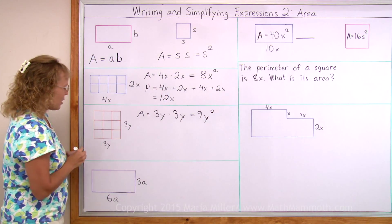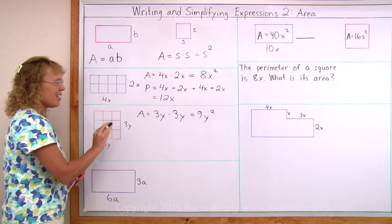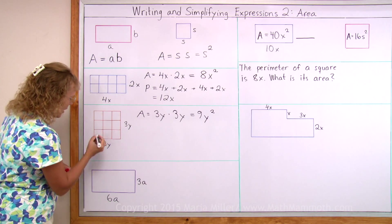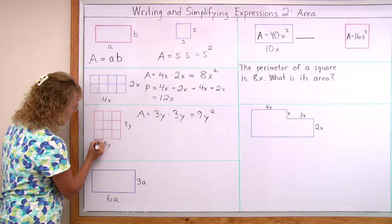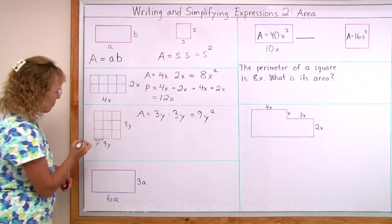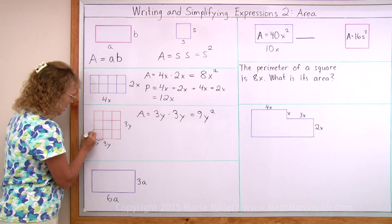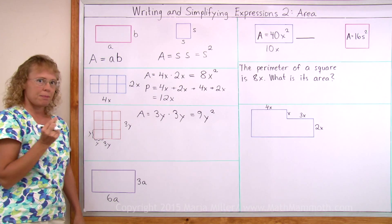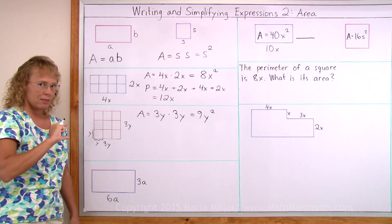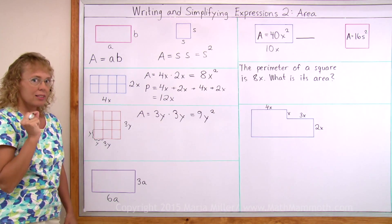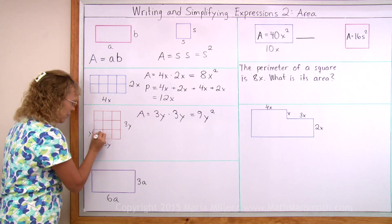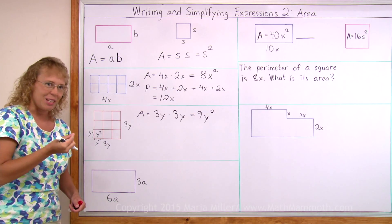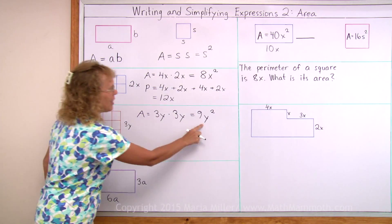I also want to show you something over here. 9y squared, how we can visualize it here in this square. Like I just mentioned, this here is y long. And this side here is y long. So the area of one of these little squares is y times y, which is y squared. And we have 9 such squares. A total area of 9 times y squared, which is right here too.